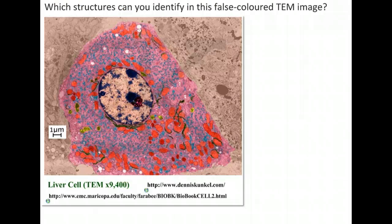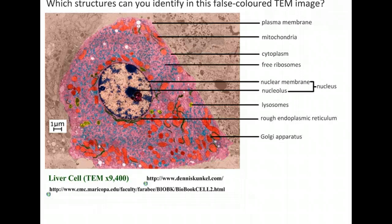Here's some more practice — can you label the parts? Here are the answers. And here's a comparison: you're going to have to be able to compare prokaryotes and eukaryotes. Here's a chart that we can fill out right now — memorize this, practice this, and you've got it. You might want to pause it and see if you can fill in a chart like this, and if you can't, here are the answers.